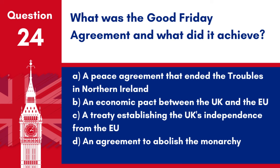Question 24: What was the Good Friday Agreement and what did it achieve? a. A peace agreement that ended the Troubles in Northern Ireland. b. An economic pact between the UK and the EU. c. A treaty establishing the UK's independence from the EU. d. An agreement to abolish the monarchy. Answer: a. A peace agreement that ended the Troubles in Northern Ireland. The Good Friday Agreement, signed in 1998, was a major political development that helped to bring an end to decades of conflict in Northern Ireland.